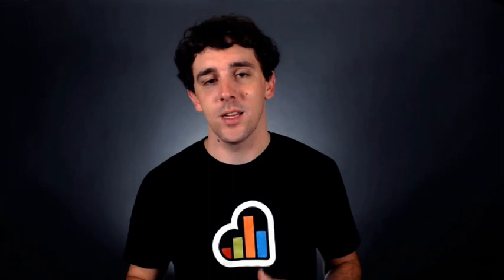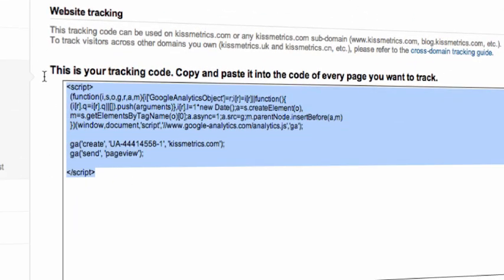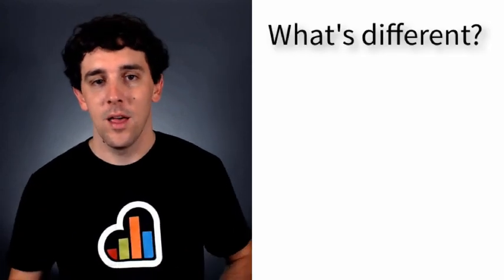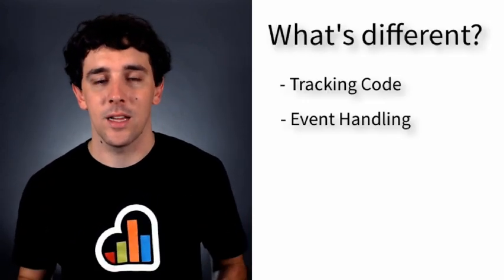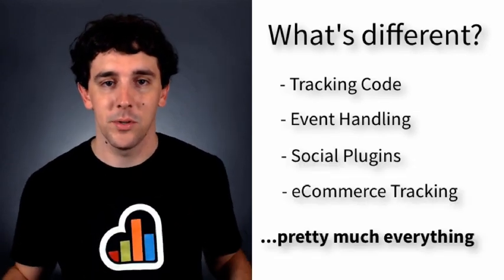Now it's time to install this. As soon as you finish setting up your new property, you are taken to a page that shows you your new Google Analytics code. It should have looked something like this. If you've ever used Google Analytics in the past, you'll notice that this code looks completely different. That's because it's been rebuilt from the ground up. Everything from the tracking code to event handling, all the way to social plugins and e-commerce, everything looks completely different.